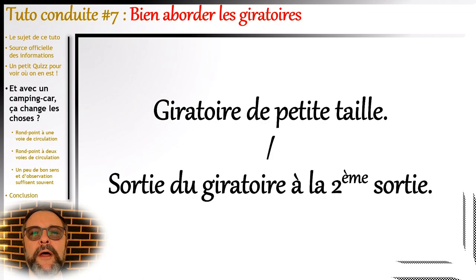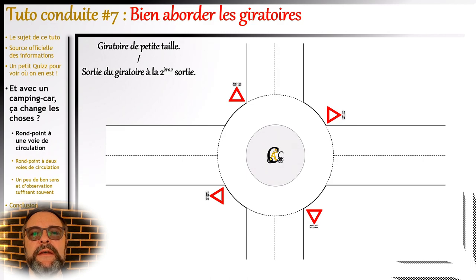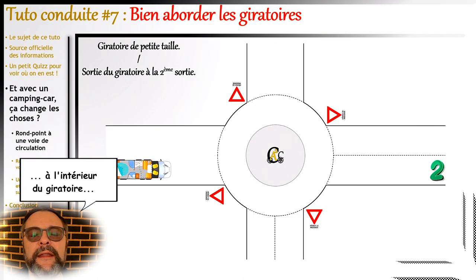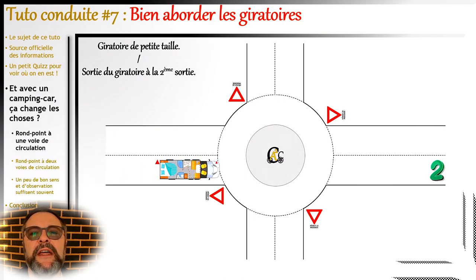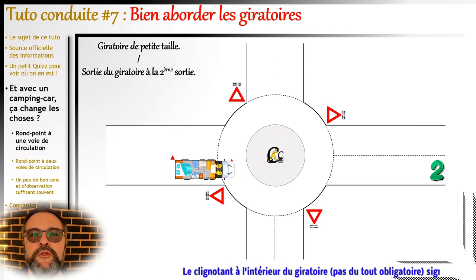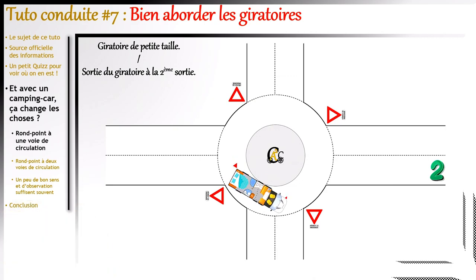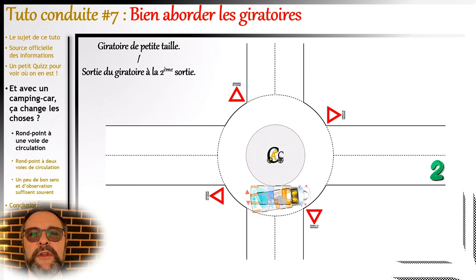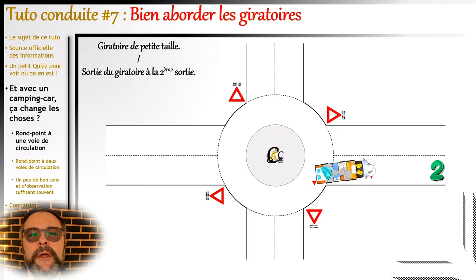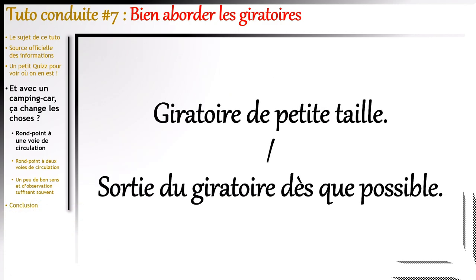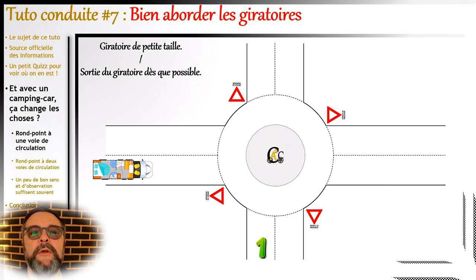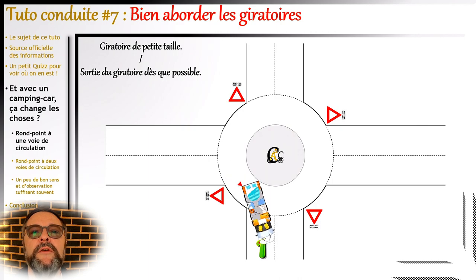L'utilisation des clignotants est un point important. Par exemple, tant que je reste dans le giratoire avec le camping-car, j'ai tendance à laisser mon clignotant à l'intérieur, ce qui informe les personnes qui attendent pour rentrer qu'il ne faut pas y aller. Cependant, le clignotant à l'intérieur des giratoires n'est pas obligatoire. Quand je dépasse l'avant-dernière sortie, je change et mets mon clignotant à droite pour indiquer que je sors à la prochaine — ceci est obligatoire et vous pouvez prendre un PV si vous ne le mettez pas. Dans le cas de la première sortie, il faut mettre son clignotant à droite dès l'entrée dans le giratoire et le conserver jusqu'à être sorti.